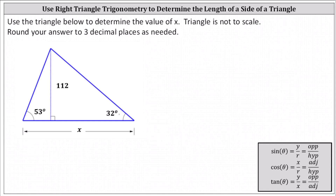Looking at the blue triangle, notice we also have the altitude, which breaks the triangle into two right triangles. We have a right triangle on the left, and we also have a right triangle on the right.